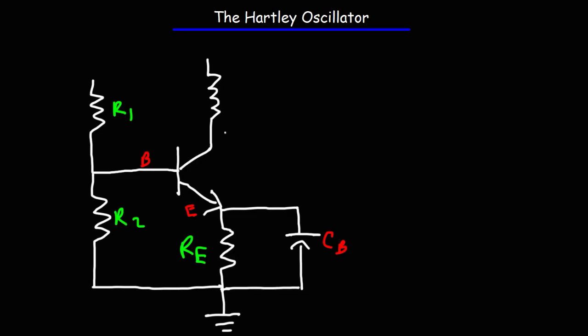Now you could use a collector resistor RC or you could use a radio frequency choke which we'll call RFC. The purpose of the radio frequency choke is to allow DC current to flow through into the collector of the NPN transistor but provide high reactance to high frequency signals, thus increasing the overall voltage gain.